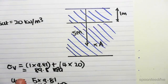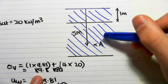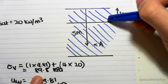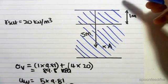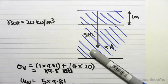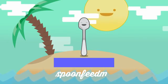And also the sigma v is not only the weight of the soil, but we've got 1 meter of water on top of that as well. I hope that helps, guys. Thank you.